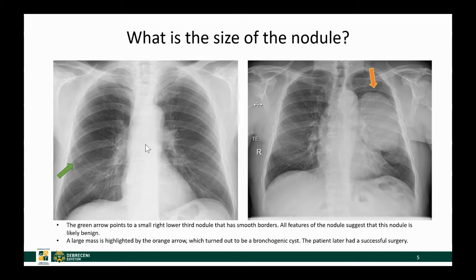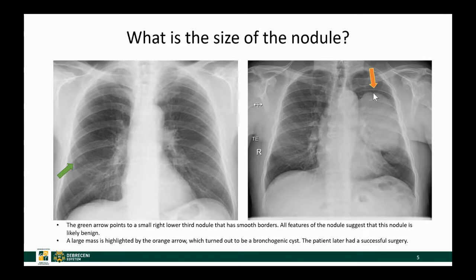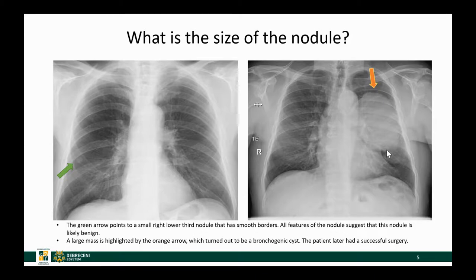With x-ray we can also report on the size of the nodule. As a reminder, smaller than 3 cm is a nodule; larger than 3 cm is a mass. Here you can see a smaller nodule with smooth borders — probably benign — and a mass in the left lung which, even though it's quite homogeneous with smooth borders, requires further characterization with CT based on its size alone. This patient cannot be sent home; they need a CT. This actually turned out to be a bronchogenic cyst, and after surgery the area cleared up completely on the following chest x-ray.